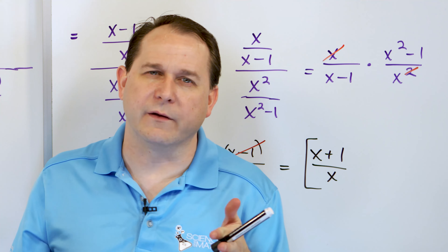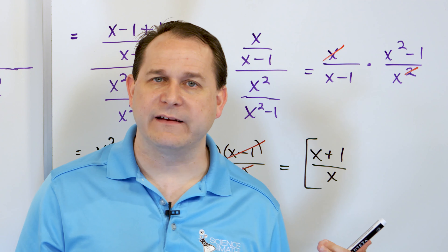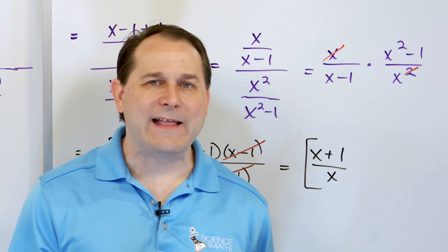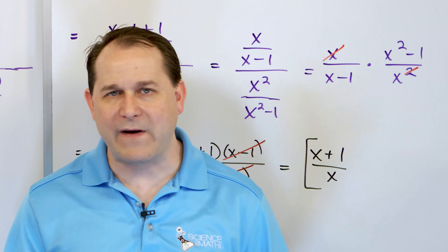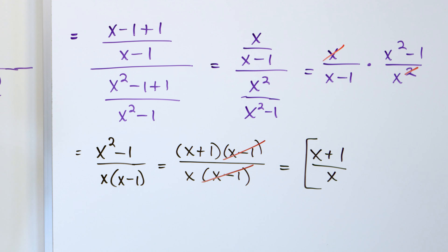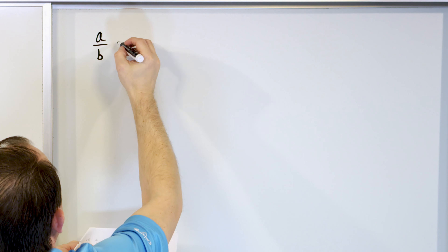Anytime you have square terms anywhere, just try to factor them. In this case we could, and got the answer (x+1)/x. This problem would have been super hard in the first batch, but now it's difficult looking yet actually went pretty fast. You already kind of know what to expect: find common denominators, add things, change division to multiplication, cross simplify, factor and simplify again.